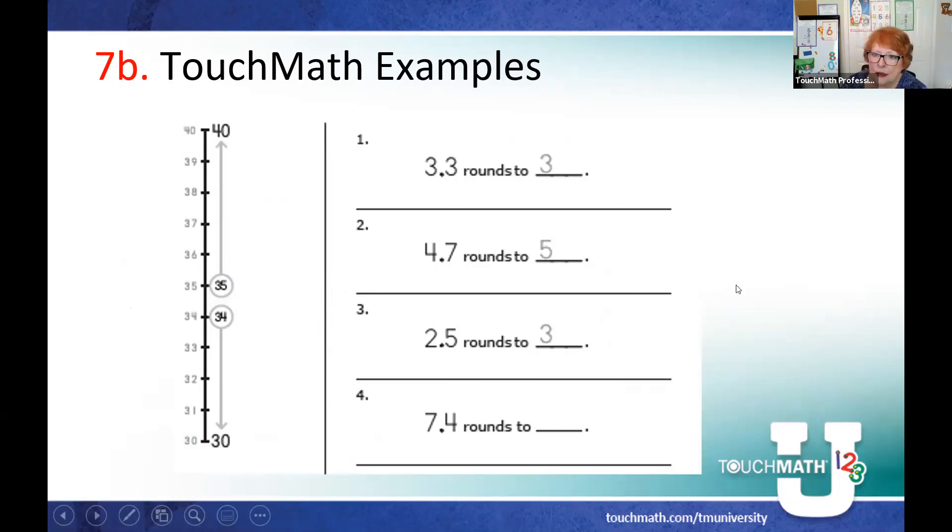You can do that with whole numbers. You can do it with decimals. This is a TouchMath example. Came out of some of the TouchMath activity sheets. And they did the same thing. So if I'm going to round 3.3 to the nearest whole number, I have to start at 3. My stop is at 4. So where is 3.3? It's here. Is it closer to 3 or is it closer to 4?